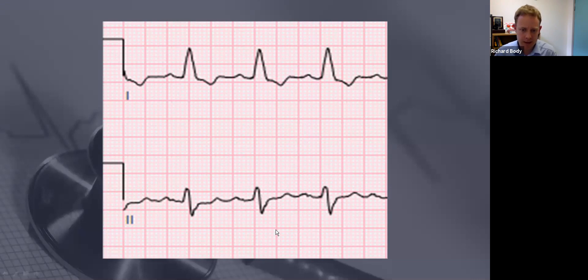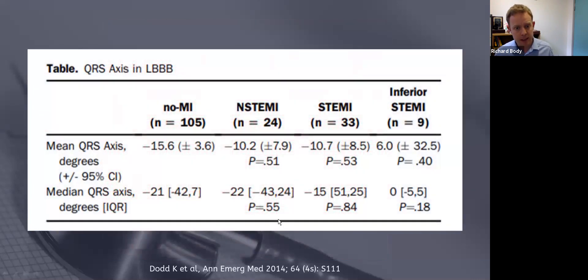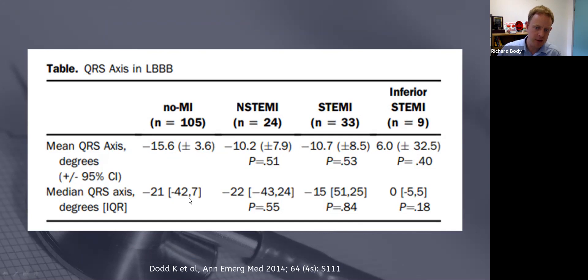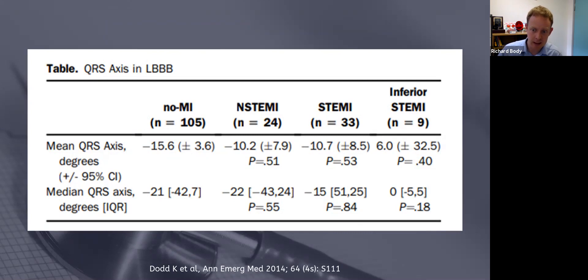If it's doing that in lead 2 it's left axis deviation; if it's doing that in lead 1 it's right axis deviation. So we've got left axis deviation in this ECG and left bundle branch block. We often do get left axis deviation in left bundle branch block and it's normal. There's an abstract from Ken Dodd in Minnesota from Steve Smith's group which shows we do have a slightly leftward axis in patients with left bundle branch block. In patients without MI, the median QRS axis is minus 42.7 - the normal range is up to minus 30 - so over 25% and in fact almost 50% of people have an abnormal left axis deviation when they have left bundle branch block. So it's quite a normal finding.